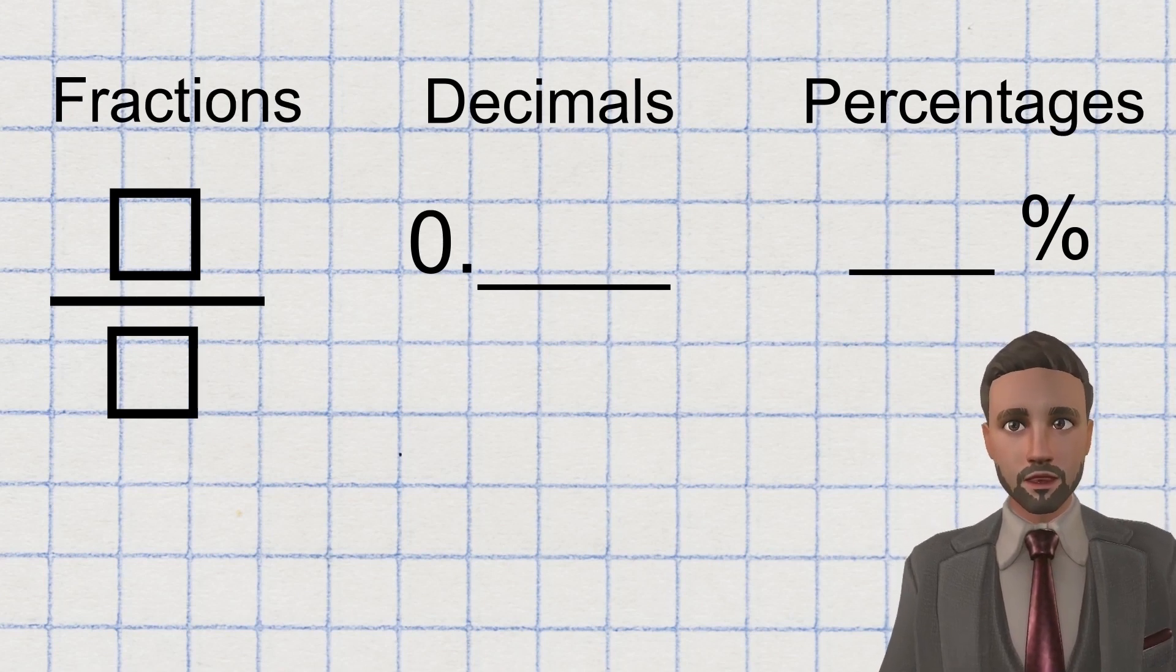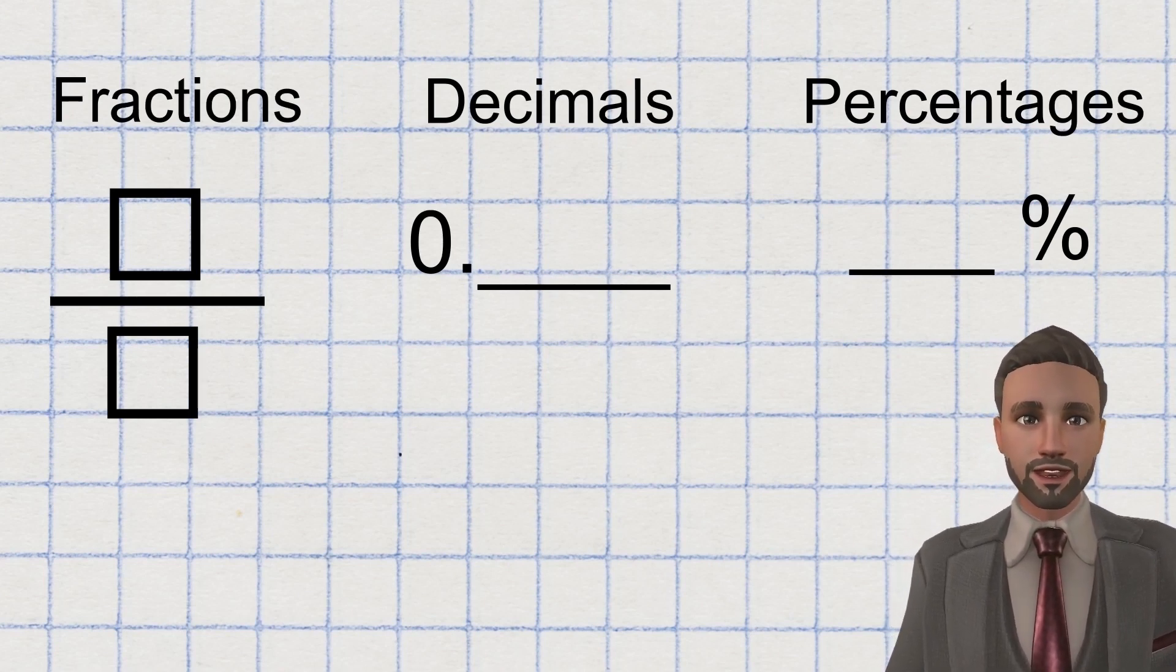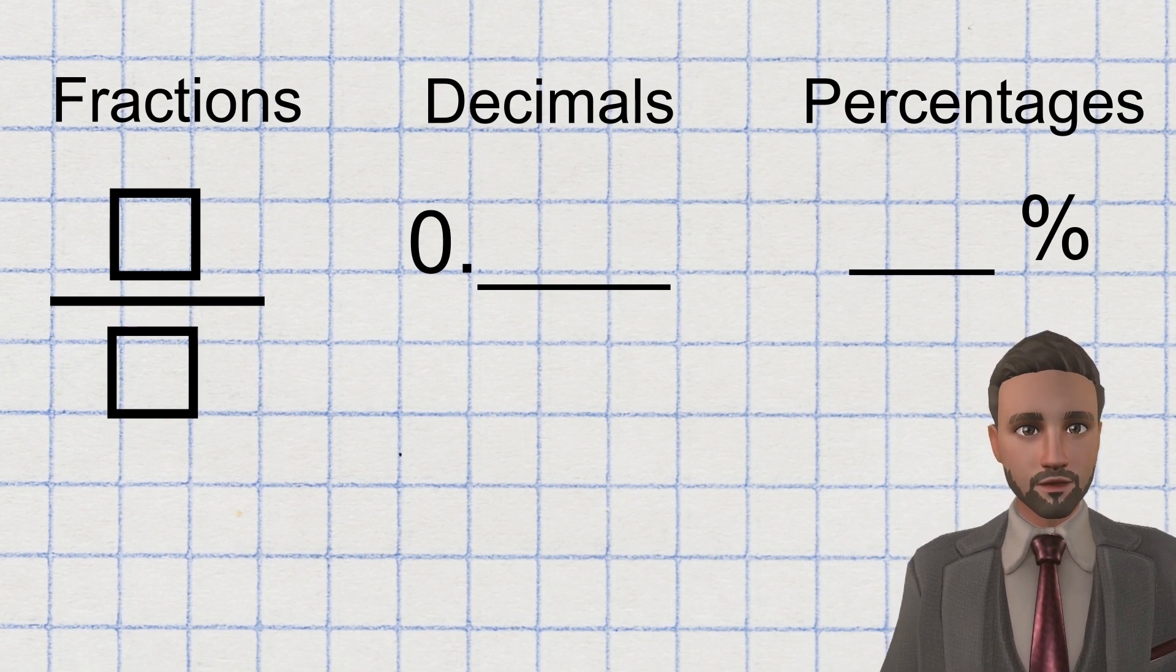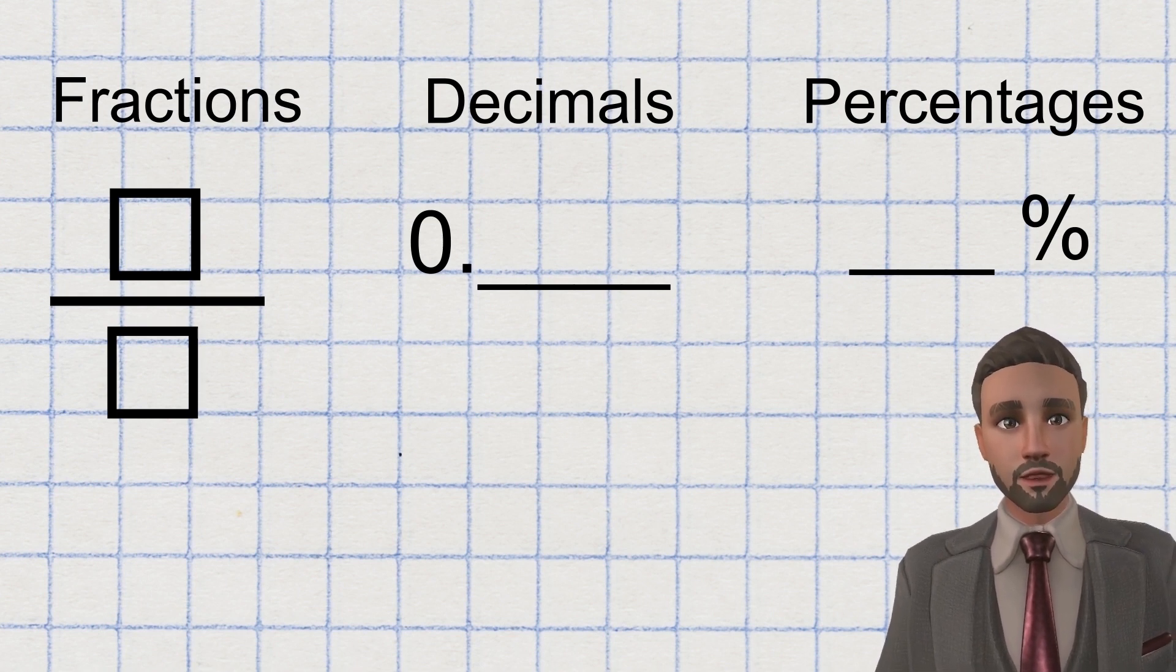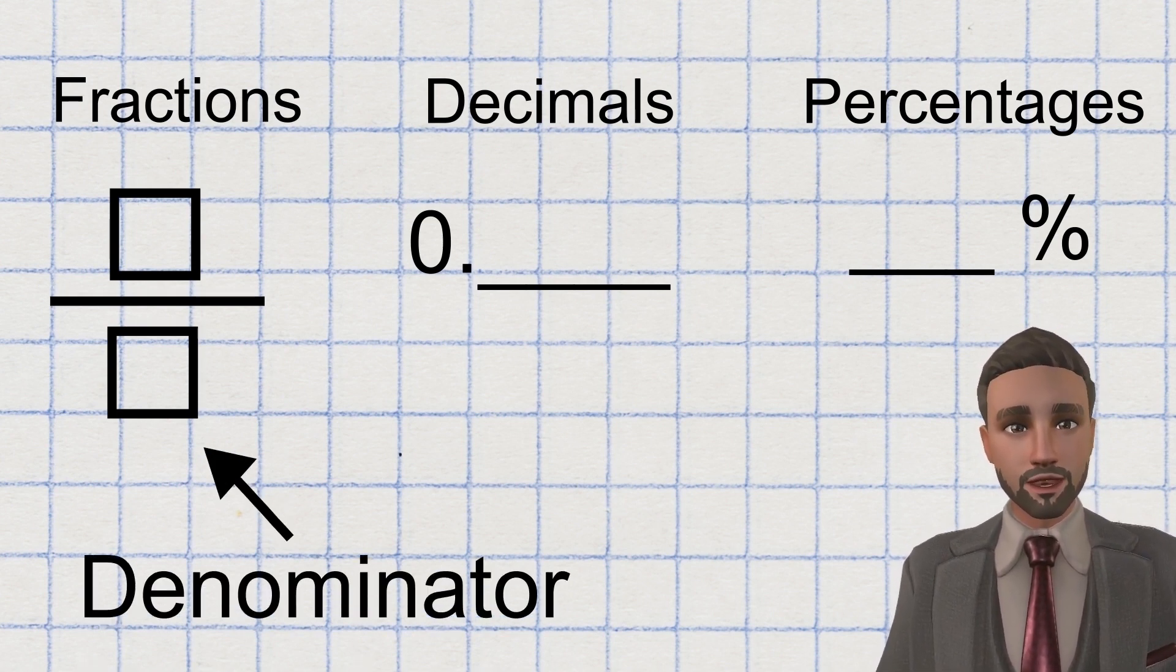As I said, all of these methods represent when we don't have a complete whole. When we use fractions, we put the amount that the whole is split equally into at the bottom, otherwise known as the denominator.